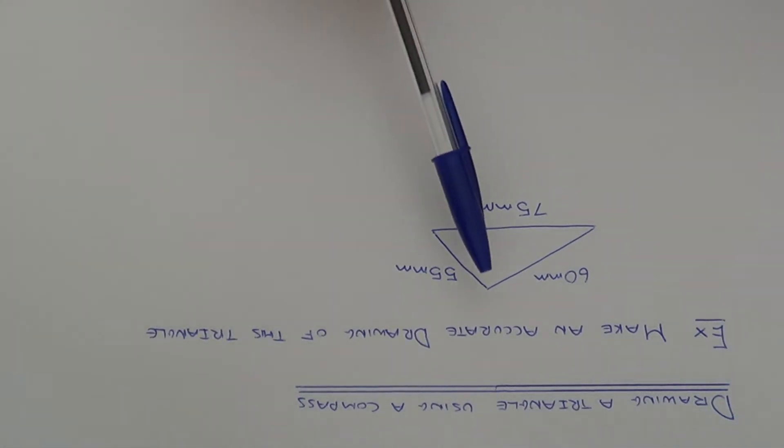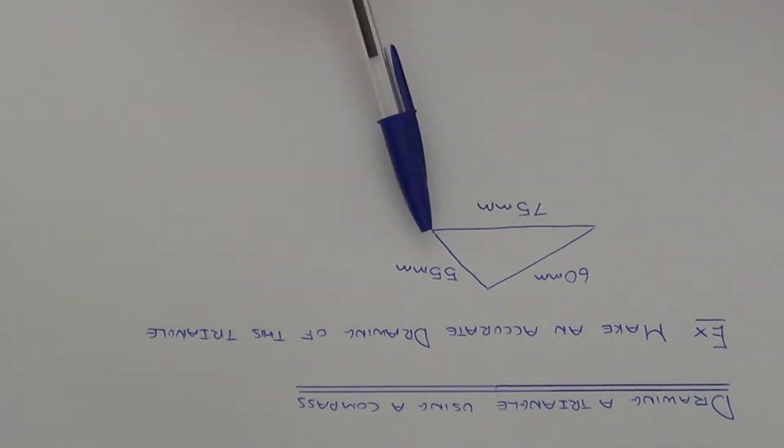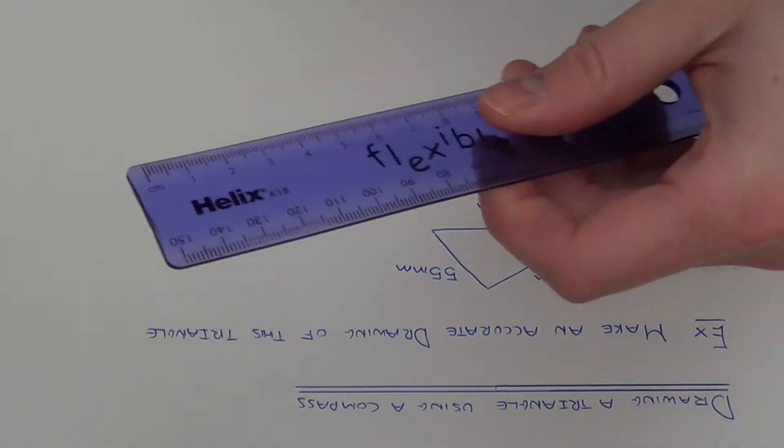If you're given three side lengths of a triangle, then the triangle may be drawn accurately using a compass and a ruler.